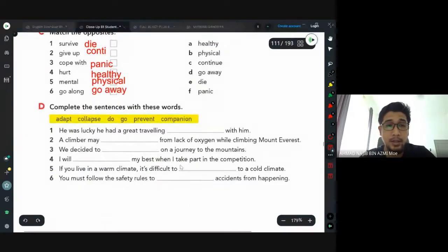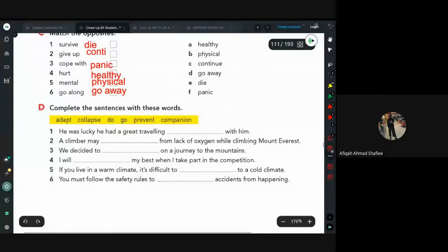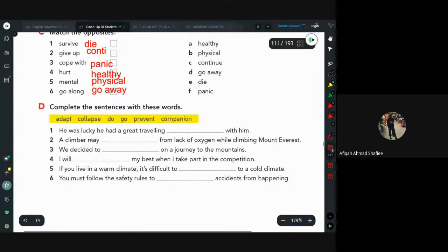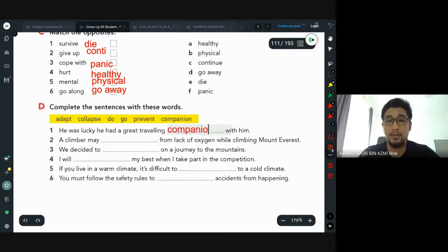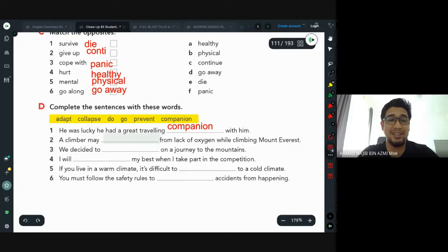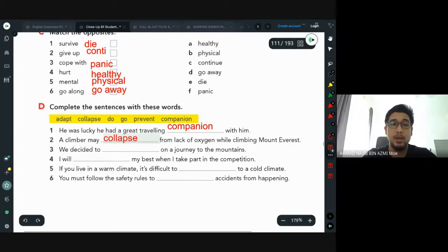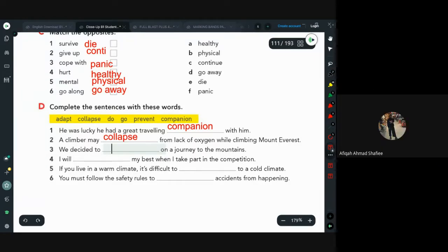D, can we have Afiqah? Complete the sentences with these words. Number one: he was lucky he had a great traveling companion with him. Companion means sahabat. Number two: a climber may collapse from lack of oxygen while climbing Mount Everest. Collapse means tumbang, pengsan. Number three: we decided to go on a journey to the mountains. Number four: I will do my best when I take part in the competition.